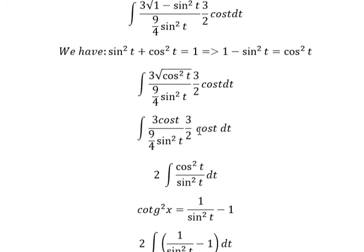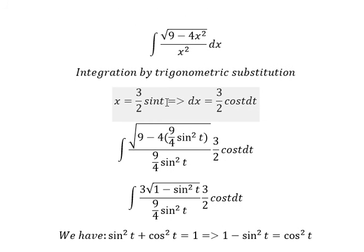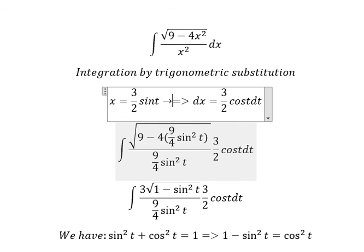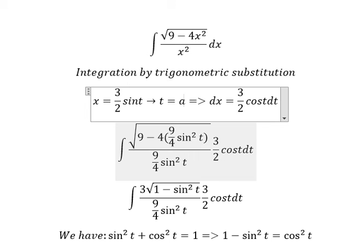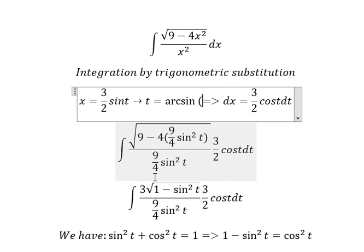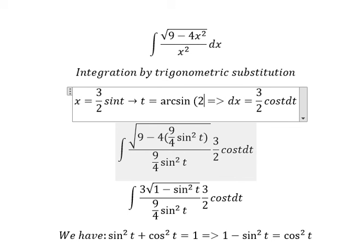For t, we need to change back to the original variable. So we put number 2 in here and number 3 in here, so you got t equal to arcsin of 2x over 3, and we put this one back.